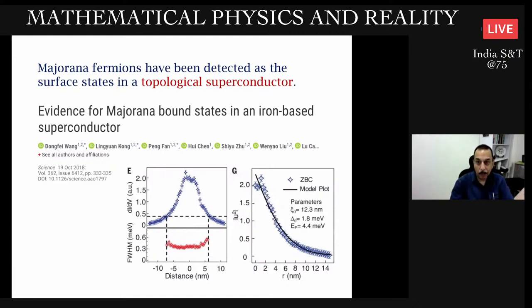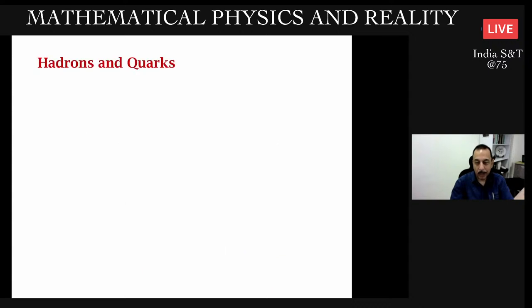His fermions have been detected or claimed to have been detected as surface states in a topological superconductor. This paper from two or three years ago - I think this is still somewhat controversial, but it's hotly discussed. It's an important paper providing evidence for these so-called Majorana particles. The evidence is encoded in the behavior of some of these plots.